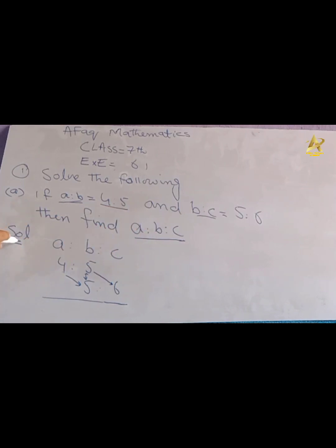Dear students, here we will solve the solution. First we need to find A ratio B ratio C. We set up the ratios: A ratio B is 4 ratio 5, and B ratio C is 5 ratio 6. Since B is already the same value in both ratios, we can write A ratio B ratio C.